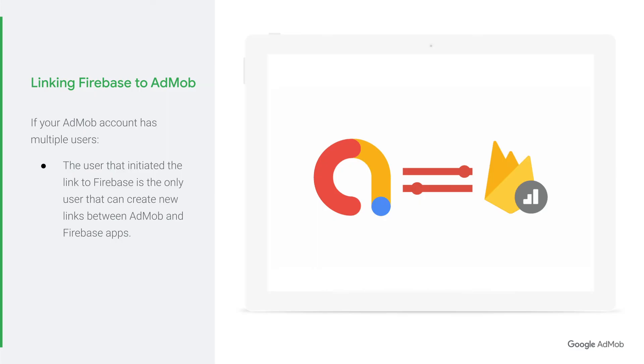Please also note that if your AdMob account has multiple users, you must be the user who initiated the first link to Firebase and accepted the Firebase Terms of Service. The user who created the first Firebase link is the only user that can create new links between AdMob and Firebase apps. Once you complete all the above steps, simply follow the instructions in the next couple of screens to link your AdMob account to Firebase.